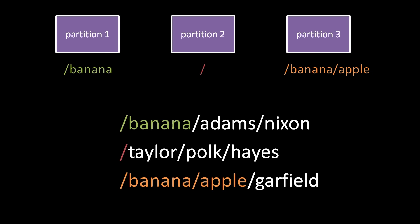With these partitions mounted like this, the path /banana/adam/nixon now refers to a file or directory named nixon listed in the directory adams listed in the root of partition 1. The path /taylor/polk/haze now refers to a file or directory named haze listed in the directory polk, listed in the directory taylor, listed in the root of partition 2.